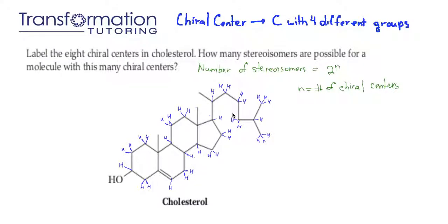Label the eight chiral centers in cholesterol. How many stereoisomers are possible for a molecule with this many chiral centers? First we need to figure out what a chiral center is. A chiral center is a carbon that has four different groups attached to it. Sometimes it's a little hard to figure out, so in this problem I will show you how.